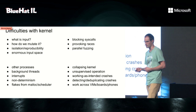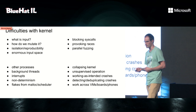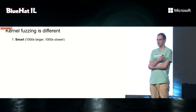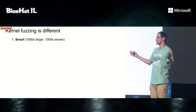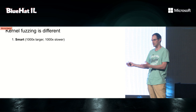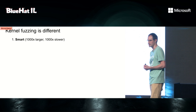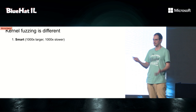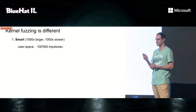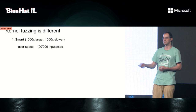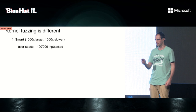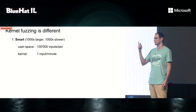Kernel fuzzing is different, and two key takeaways. One is that you need to be smart — the input space is at least three orders of magnitude larger, and execution speed is at least three orders of magnitude slower because you need to create processes, do system calls, and block on blocking system calls. That's six orders of magnitude combined. In user space you can get 100,000 inputs per second, but if you scale by six orders of magnitude, you get one input per minute. So you want to choose that one input very carefully.